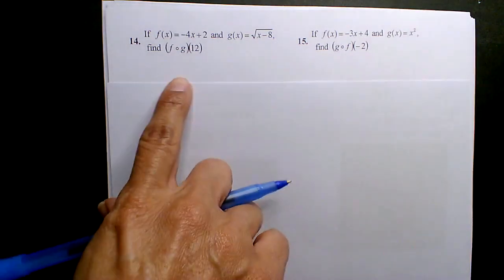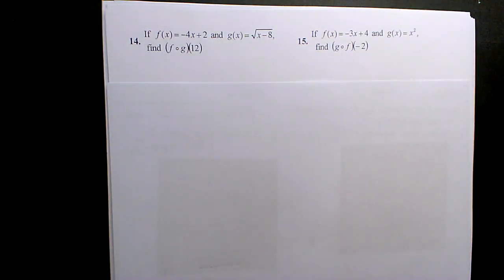Alright, so it's written in function notation. It's a composite of two functions, which basically means it's a double substitution. The first input becomes an output. That output becomes a secondary input. It's like a domino.